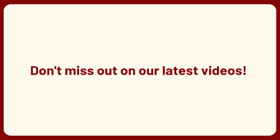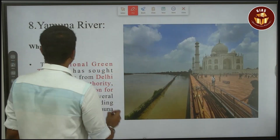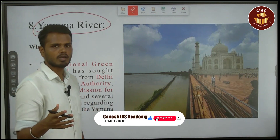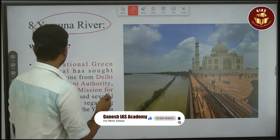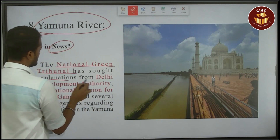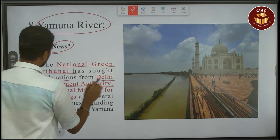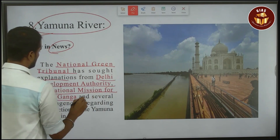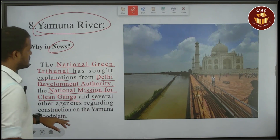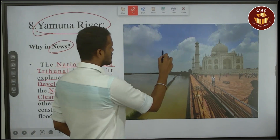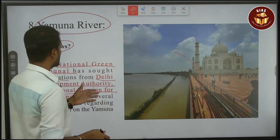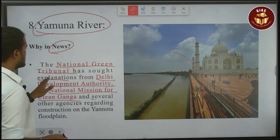Don't forget to like, subscribe and share the videos. The Yamuna river is one of the major tributaries. This is the National Clean Tribunal seeking an explanation from the Delhi Development Authority, National Mission for Clean Ganga, and several other agencies regarding construction on the Yamuna floodplain.